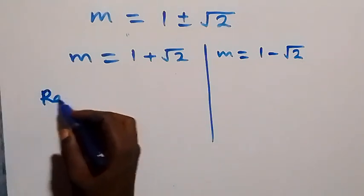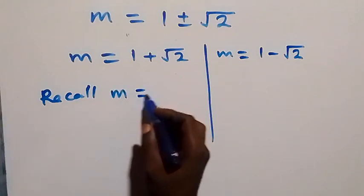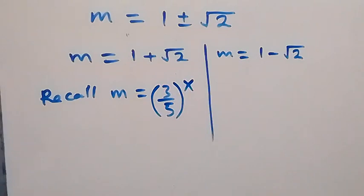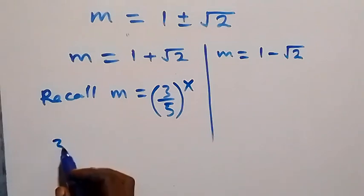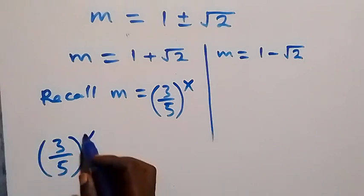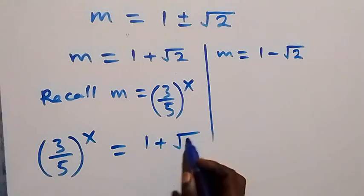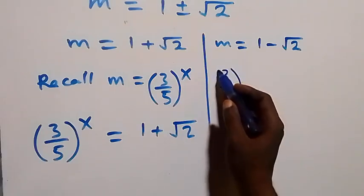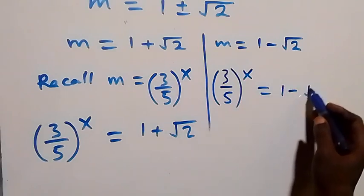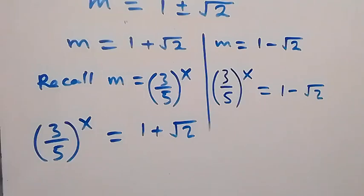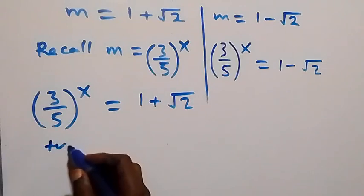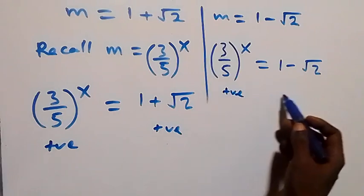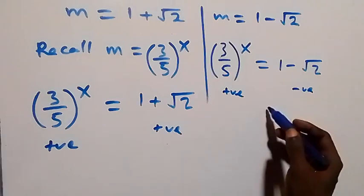We can recall that we represented m as (3/5) raised to power x. So we equate both values: (3/5) raised to power x equals 1 plus root 2, and on the other side, (3/5) raised to power x equals 1 minus root 2. Now, the left side is always positive, and 1 plus root 2 is positive, but 1 minus root 2 is negative.